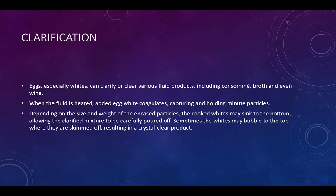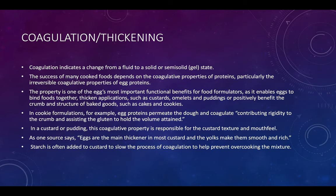While color is an important factor in food product development, it would be rare for eggs to be used as an ingredient solely for their color contribution, since eggs possess multiple functional benefits beyond coloring ability. Clarification: eggs — specifically egg white — can clarify various fluid products including consommé, broth, or even wine. When the fluid is heated, the added egg white coagulates, capturing and holding minute particles. Depending on the size and weight of the engaged particles, the cooked white may sink to the bottom, allowing the clarified mixture to be carefully poured off, or the white may bubble to the top where it is skimmed off, resulting in a crystal-clear product.